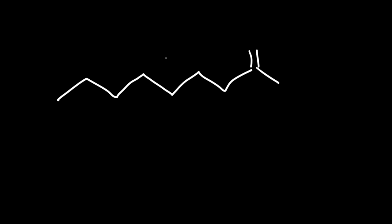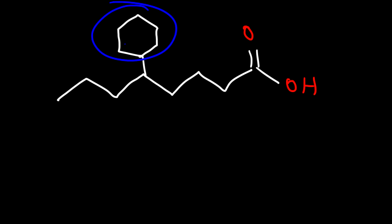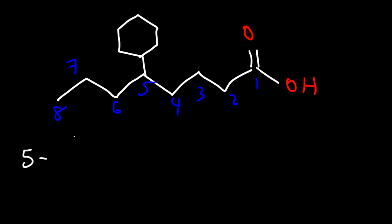Now let's try another example. Let's say we have a cyclohexane ring attached to a chain that contains the carboxylic acid. What's the name for this molecule? So now the cyclohexane ring is going to be a substituent, called cyclohexyl. And so that substituent is going to be on carbon 5. We have an 8-carbon chain, so instead of saying octane, it's going to be octanoic acid. To put it all together, this is 5-cyclohexyloctanoic acid.